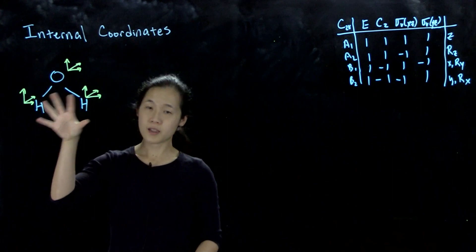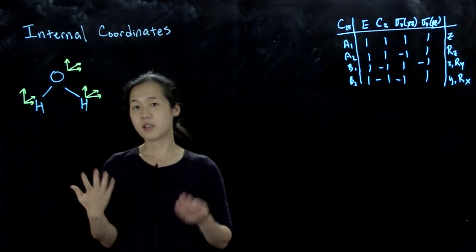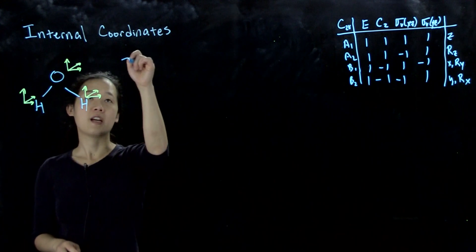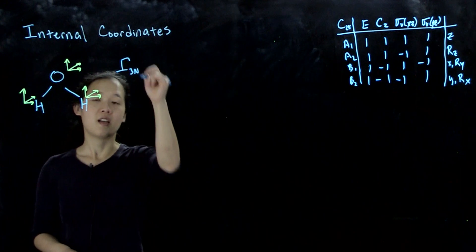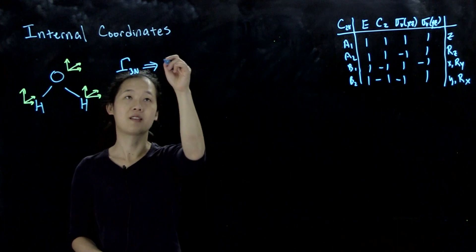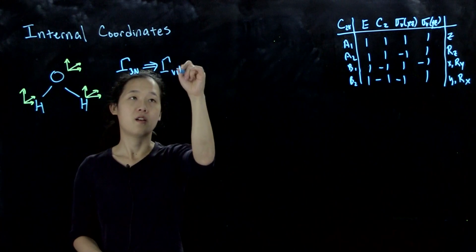Last video we talked about using the XYZ corners on each atom for any polyatomic molecule. We said that you can find gamma 3n and then once you subtract out your rotational and translational motions, you can get to your vibrations.